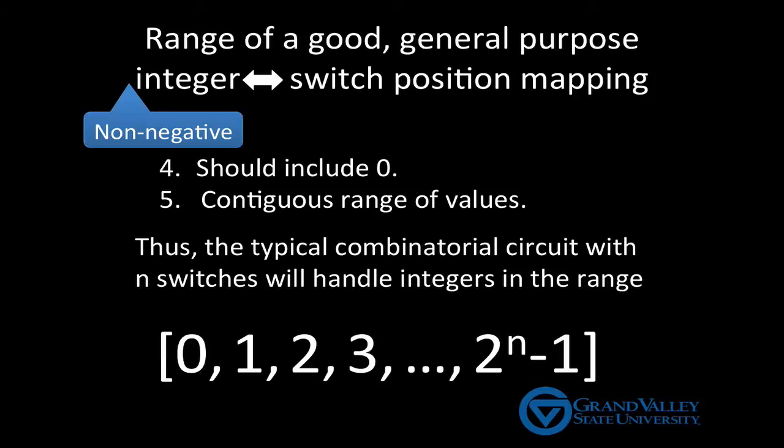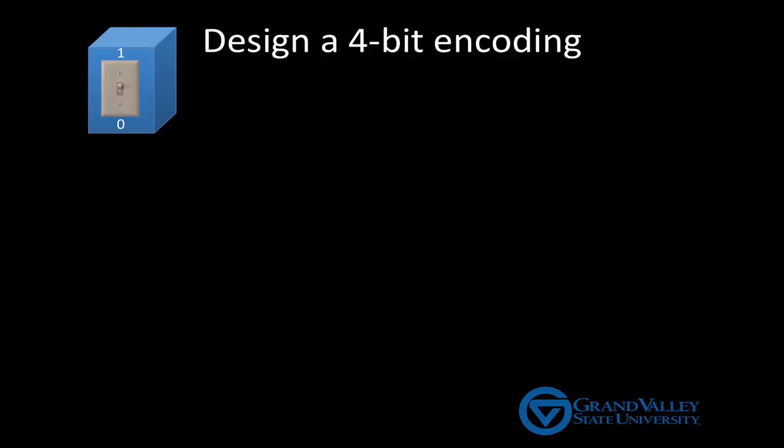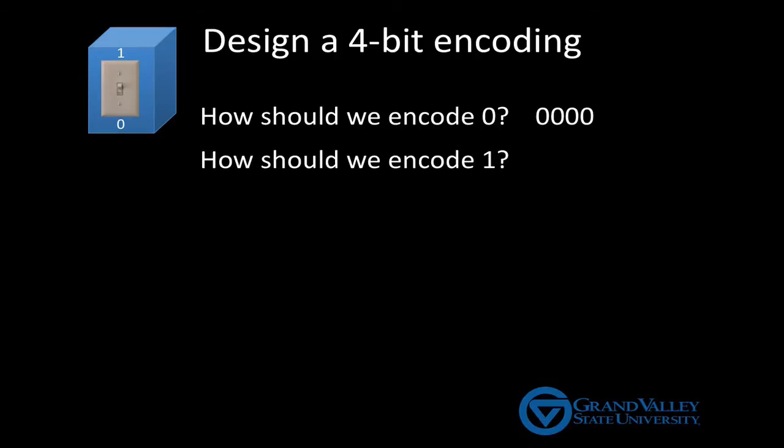The next question is, which switch positions correspond to which integers? Let's consider the specific case where we have four switches. And, as we did in video one, we're going to label the switches with zero and one instead of on and off. The reason will become obvious in a minute. First, how should we encode zero? In other words, which switch positions should mean zero? Well, hopefully you agree that four zeros makes the most sense. That's not to say it's the only way to do it, but if you're going to design such a mapping from scratch, this seems like the most logical place to start. Okay, so now how about 1? Again, I hope you'll agree that 0001 is the most obvious thing to try.